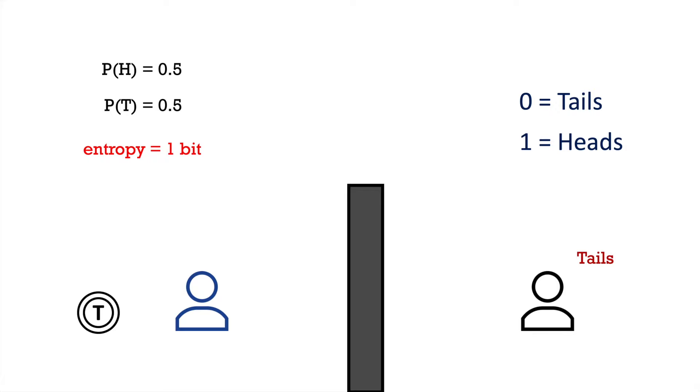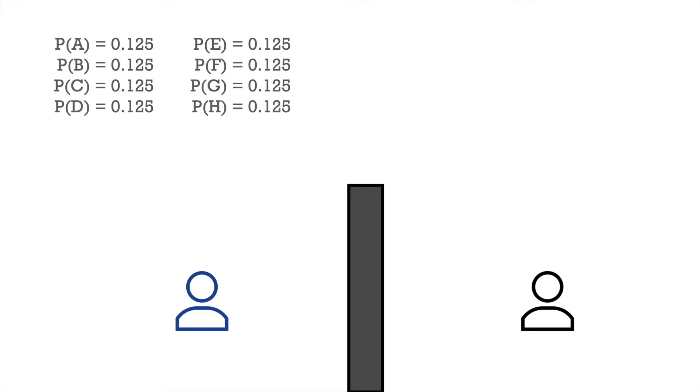Now, imagine a similar random event but now with 8 different possible outcomes. Maybe there's an international football tournament with 8 equally strong teams, so the probability of any team winning the tournament is 1 over 8. In this case, we now need 3 bits to encode the outcome as 3 bits can describe 2 to the power of 3 which equals 8 different states.